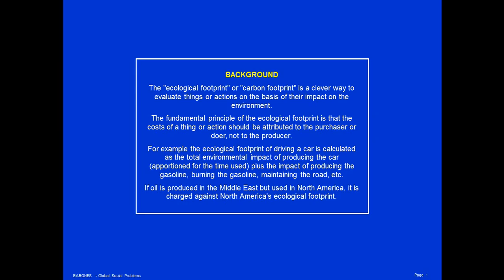For example, the ecological impact of driving a car is calculated as the total environmental impact of producing the car, plus the impact of producing the gasoline, burning the gasoline, maintaining the road you drive on, etc. If oil is produced in the Middle East but used in North America, it is charged against North America's ecological footprint because that is where the product is consumed.